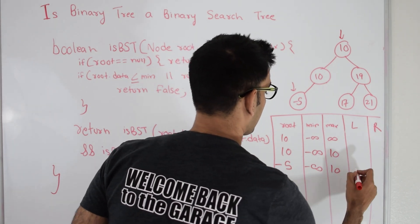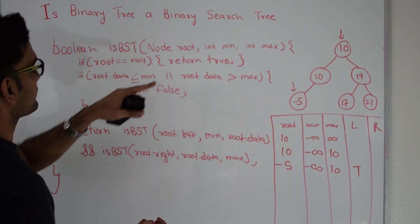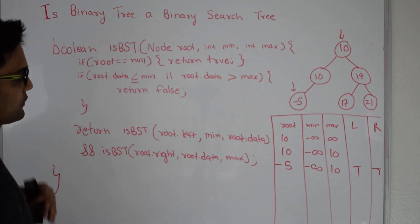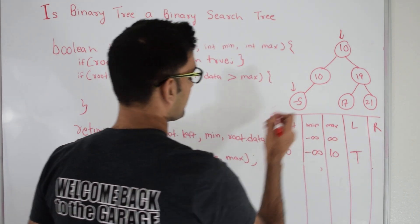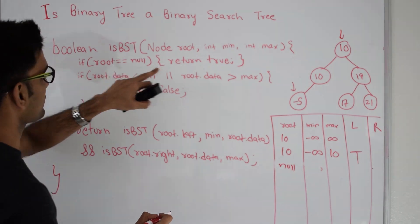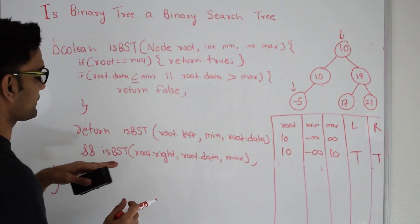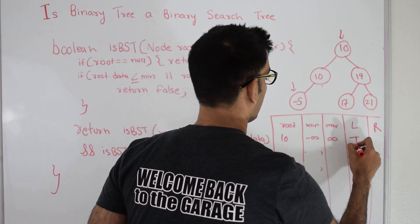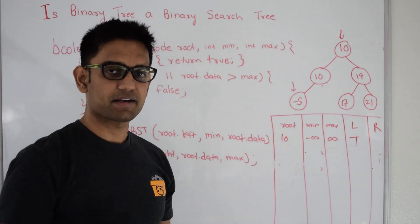So minus 5 gets true from the left. Then it goes to root right — minus 5's right is also null, so it gets true from the right side as well. Minus 5 gets true from both left and right, so it returns true back up to 10. So the left child 10 gets true from its left side, and its right is null so it also gets true from the right. 10 returns true to the root 10. Now it tries to explore the right subtree to see if that is a BST or not.